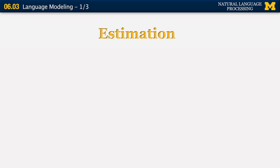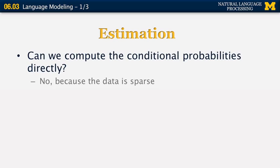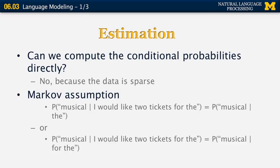Let's see how we can actually estimate the probabilities of certain words in a large corpus. We cannot compute those conditional probabilities directly because the data is very sparse. Instead, we use the Markov assumption. For the sentence 'I would like two tickets for the musical,' instead of computing the probability of 'musical' given all seven preceding words, we approximate it with the bigram — the probability of 'musical' given just the word 'the,' the previous word. This degrades performance somewhat, but it's a good trade-off for a much more flexible and robust system.